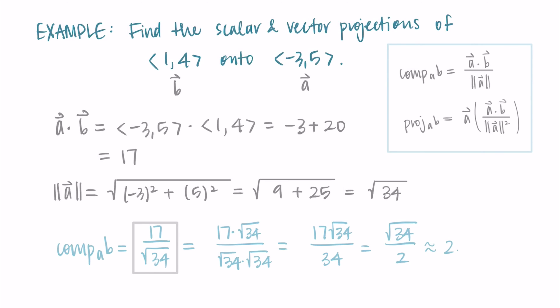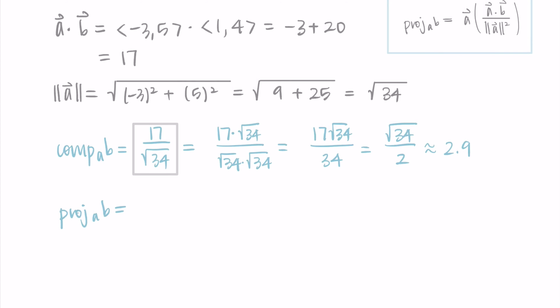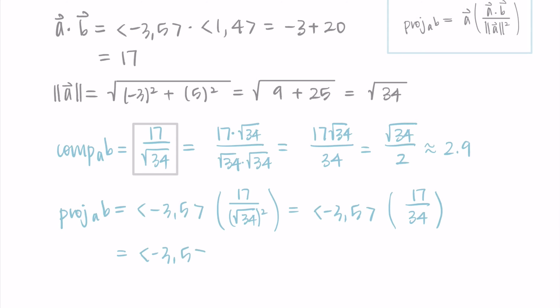That's approximately 2.9 from a calculator, but the exact answer is √34/2 (or equivalently 17/√34). Now for the vector projection of b onto a: I take vector a = (-3, 5) and multiply by a·b/|a|² = 17/34 = 1/2. Distributing 1/2 into each component gives the vector (-3/2, 5/2), which is the projection of b onto a.